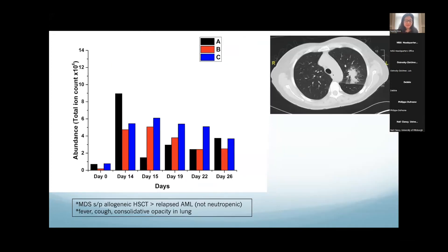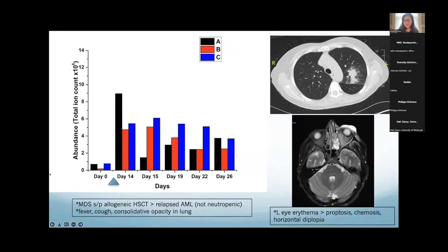Another patient with MDS who had an allogeneic stem cell transplant, relapsed AML, and was not neutropenic came with fever, cough, and a consolidative opacity. We collected her breath sample and she had this signature, very low in abundance. She was treated by the inpatient team with Levaquin and sent home. About a week later she came back with left eye erythema, proptosis, chemosis, and horizontal diplopia — imaging showed it was pretty severe and inflammatory. With that she had a marked increase in the sesquiterpene signature in her breath. She received liposomal amphotericin and it gradually dissipated over time; she ultimately had surgery to debride the area, which helped her recover.